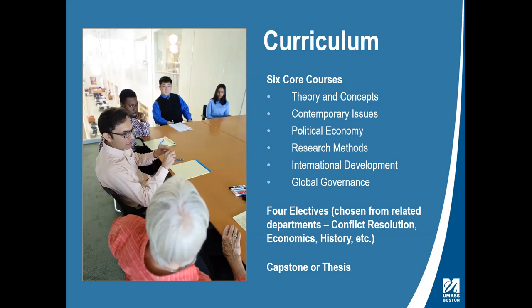Everybody finishes their degree with either a capstone course or a master's thesis. Most people satisfy the requirement by taking the capstone class, which operates a bit like a PhD graduate colloquium — you meet with a small group of second-year fellow students and a faculty member, discuss research issues, and work toward a semester paper of 25 to 30 pages of your own original scholarly research on a topic of personal interest. If you're interested in further graduate study like a PhD, you might choose instead to do the master's thesis.